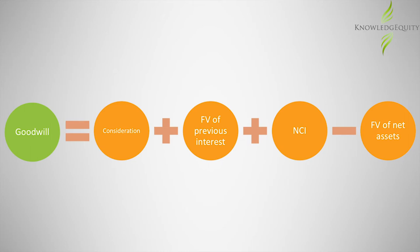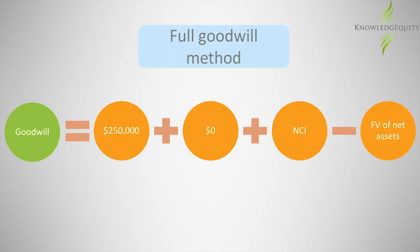We would need to substitute the amounts into the goodwill formula. Consideration is $250,000. Alfa Limited did not own any previous equity interest in Beta Limited, so this is zero. As Alfa Limited uses the full goodwill method, the amount of NCI will equal the fair value of shares held by the non-controlling interest shareholders, which is $60,000.